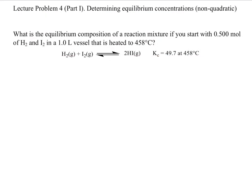Now let's take a look at another Type 2 problem. This is in that broad category but is different. This one is where we're calculating an equilibrium concentration given initial concentrations and a K. This is what distinguishes it from the previous problem. We're going to get initial concentrations and a value for K, and then we'll have to set up an ICE table.